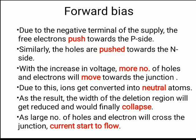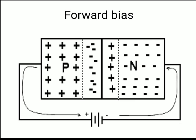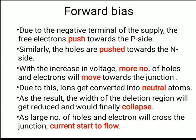Due to the negative terminal of the supply, free electrons are pushed towards the p-side, and holes are pushed towards the n-side. With increasing voltage, more holes and electrons move toward the junction, causing ions to convert into neutral atoms. As a result, the width of the depletion region reduces and finally collapses, allowing a large number of holes and electrons to cross the junction and current to flow.